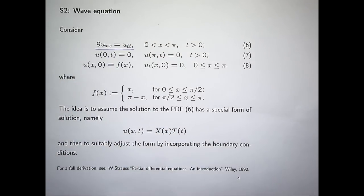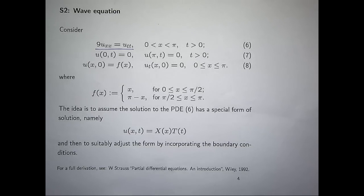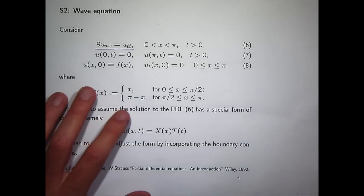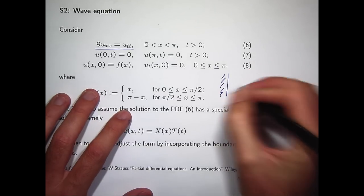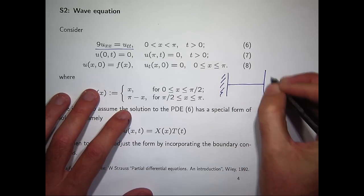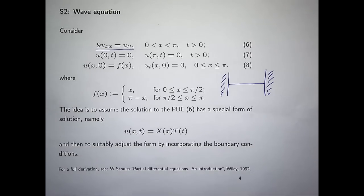So here we have a PDE. The 9 is a constant related to the wave speed. In general we have c squared next to u sub xx, where c is known as the wave speed. So in this case c squared is 9, so c is positive — it would be 3. Suppose we've got a string that's got its ends clamped or fixed at x equals 0 and x equals pi.